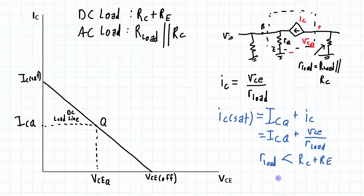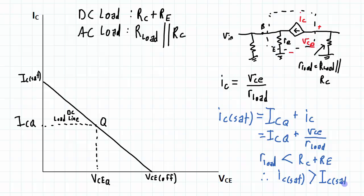I know that my IC sat is going to be greater than my DC saturation current. So on the graph here my IC sat is going to appear somewhere above the DC saturation current.